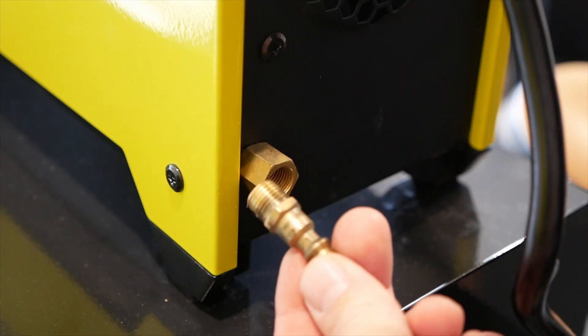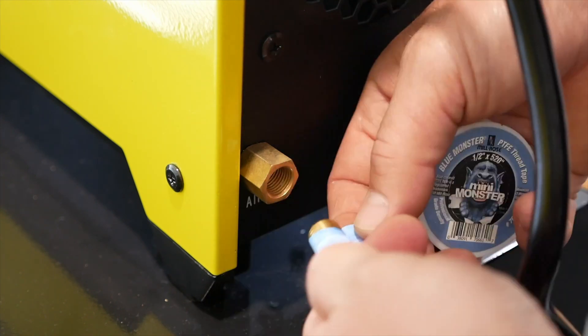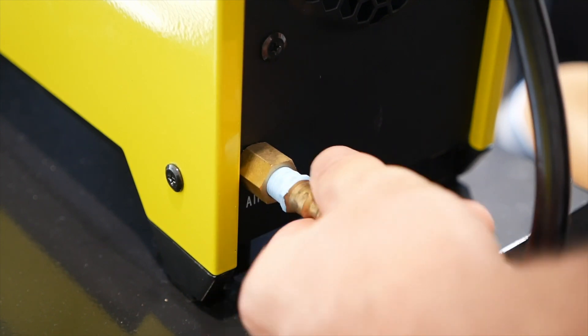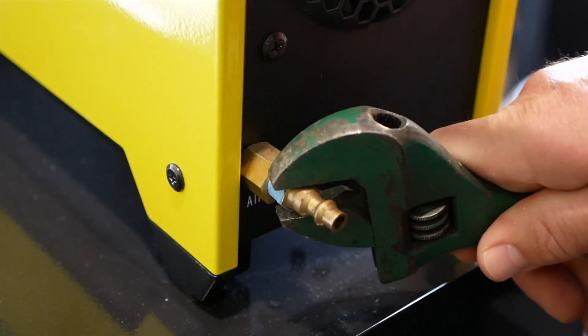The last step we need to do before we can start cutting is to hook up our airline. Sometimes you may want to disconnect your airline so installing a male quick connect fitting on the back of your machine can be useful. We'll do this using some Teflon tape. Tighten this down using a wrench but don't over tighten it.